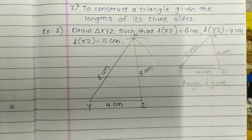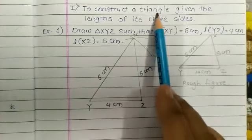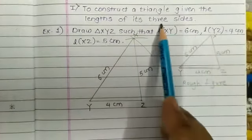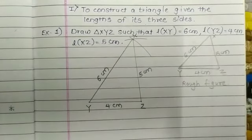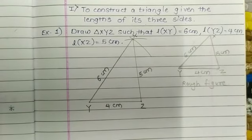This is the first type of construction: to construct a triangle given the lengths of its three sides. You have a practice set in your textbook to solve. We will meet again in the next video. Thank you.